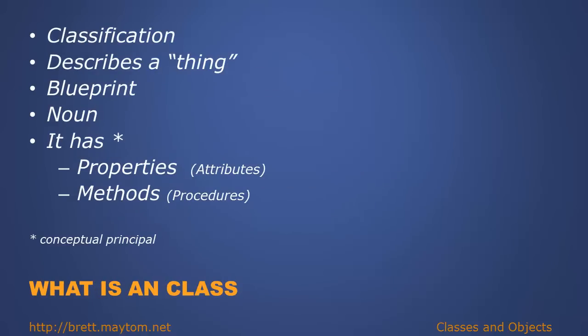What is a class? A class is short for classification. It basically describes a thing or is a blueprint for something — it is a noun. A class has properties, otherwise known as attributes, and methods or procedures. In this screencast, I'm going to focus on the conceptual principle rather than the implementation.